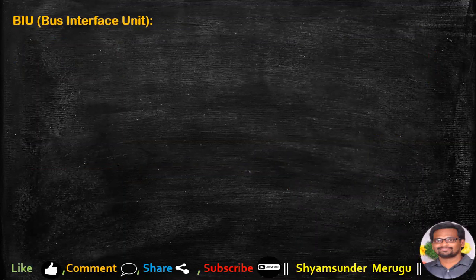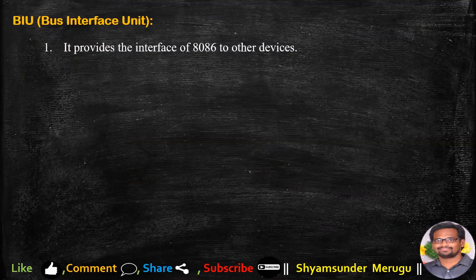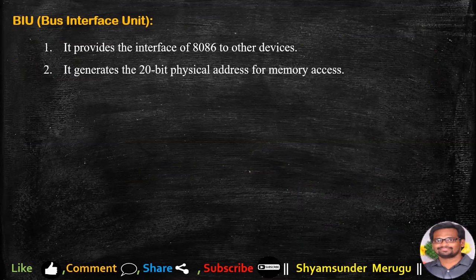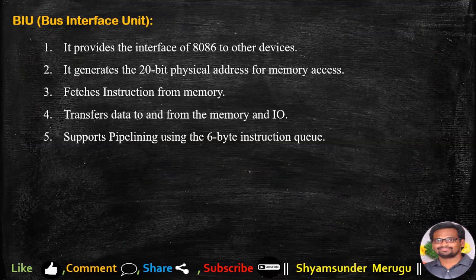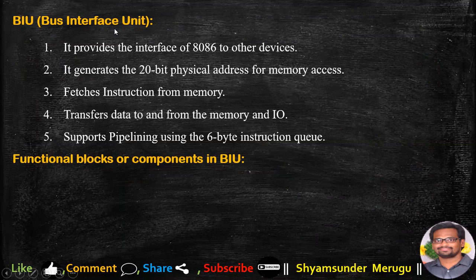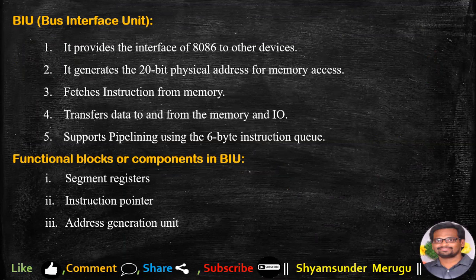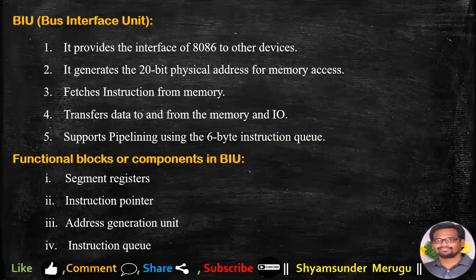Coming to the first block, BIU stands for bus interface unit. It provides the interface of 8086 to other devices or to the external world. It generates the 20-bit physical address for memory access, fetches instructions from memory, transfers data to and from the memory and I/O, and supports pipelining using the 6-byte instruction queue. The functional blocks or components in BIU are segment registers, instruction pointer, address generation unit, and instruction queue.